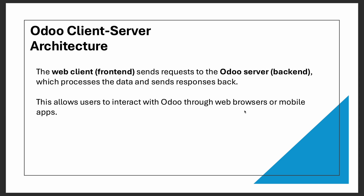Next is Odoo's client-server architecture. The web client — the front end — sends a request to the Odoo server — the backend — which processes the data and sends a response back. This allows users to interact with Odoo through web browsers or mobile apps. That is the Odoo client-server architecture.